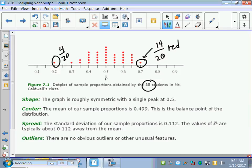The graph, we're going to go through the shape, roughly symmetric, single peak at 0.5. The center, the mean of this happens to be 0.499, really close to the true mean of the bag, which is that half the chips are red. This is the balancing point of the distribution when you do the mean.